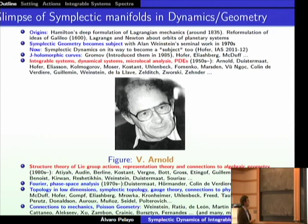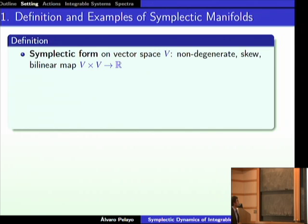This is my perspective of the subject, from the point of view of the things that I have been interested in — there are probably many other gaps you could fill in. Let me introduce the very basics of symplectic geometry. The basic object is a symplectic manifold. First let me tell you what is a symplectic form on a vector space — this is just linear algebra. Take a finite-dimensional vector space V.